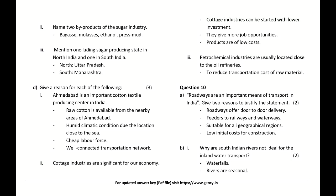Give reasons: Ahmedabad is an important cotton textile producing centre — raw cotton is available from nearby areas, humid climatic conditions due to its coastal location, cheap labor force, and a well-connected transportation network. Cottage industries are significant for the economy — they can be started with lower investment, give more job opportunities, and produce low-cost products. Petrochemical industries are usually located close to oil refineries — to reduce transportation cost of raw material.